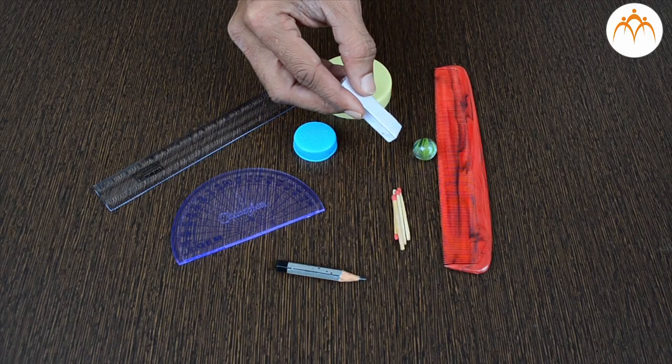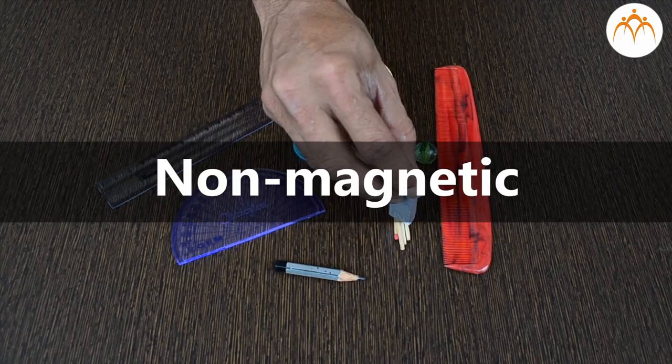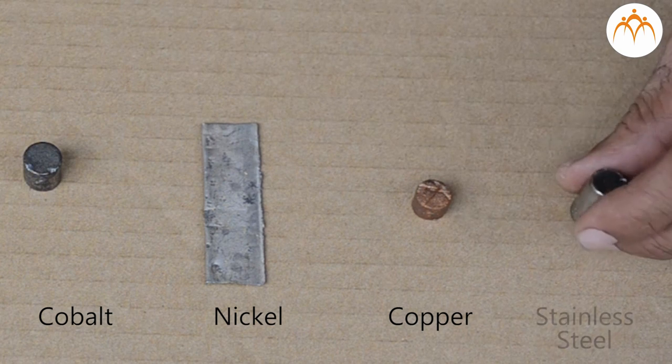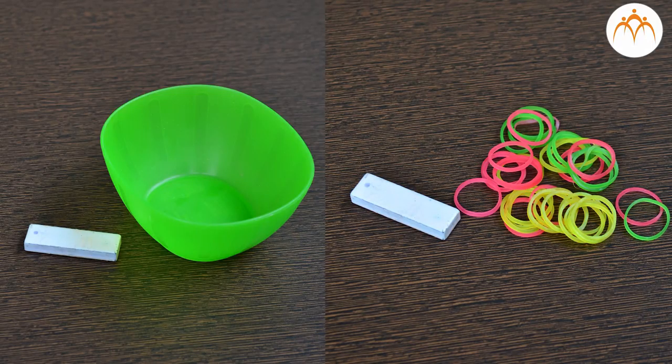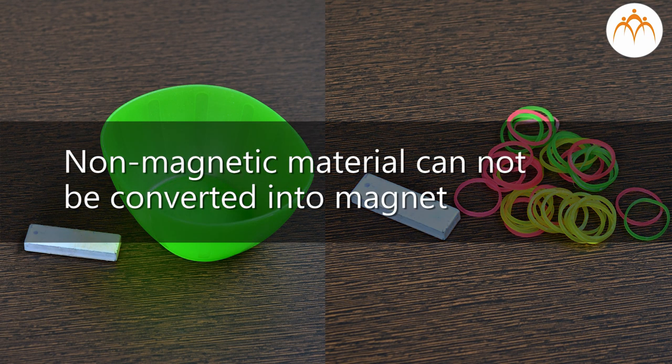Those materials which are not attracted by a magnet are called non-magnetic materials. All the substances other than iron, nickel and cobalt are non-magnetic substances. For example, plastic, rubber are non-magnetic materials. Non-magnetic substances cannot be magnetized.